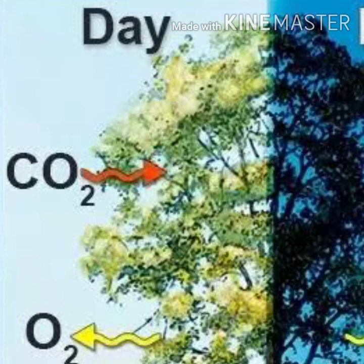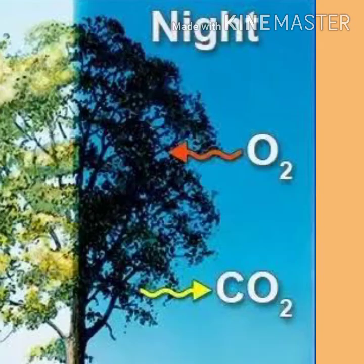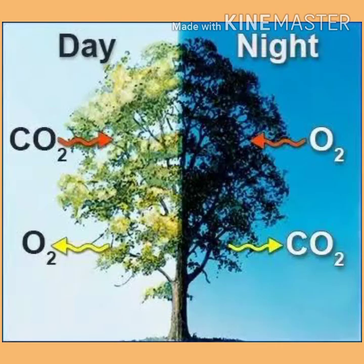During daytime, plants absorb carbon dioxide and release oxygen during photosynthesis. At night, when there is no photosynthesis, carbon dioxide elimination is the major exchange activity in plants. During the day, the carbon dioxide generated is used up for photosynthesis, so there is no carbon dioxide release. Instead, oxygen release is the major event at this time.